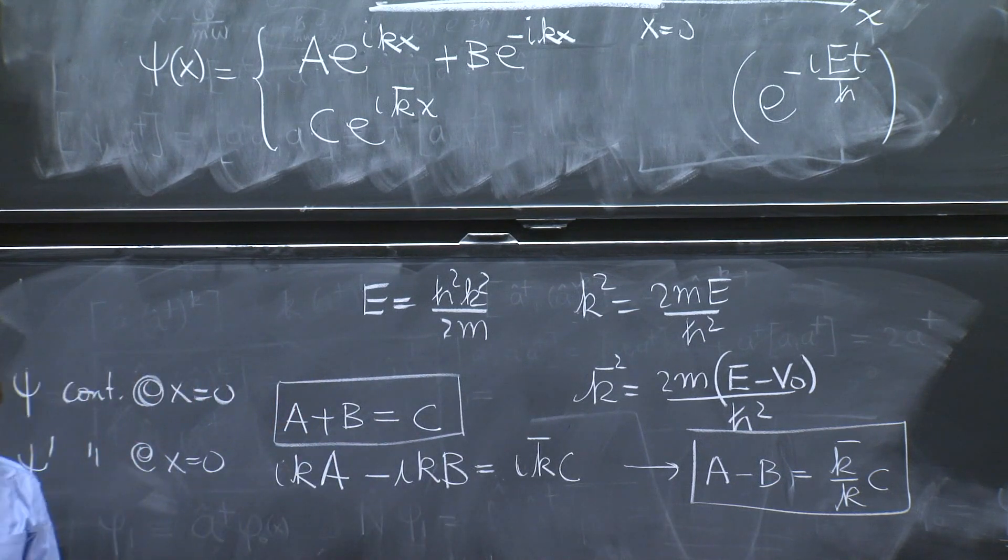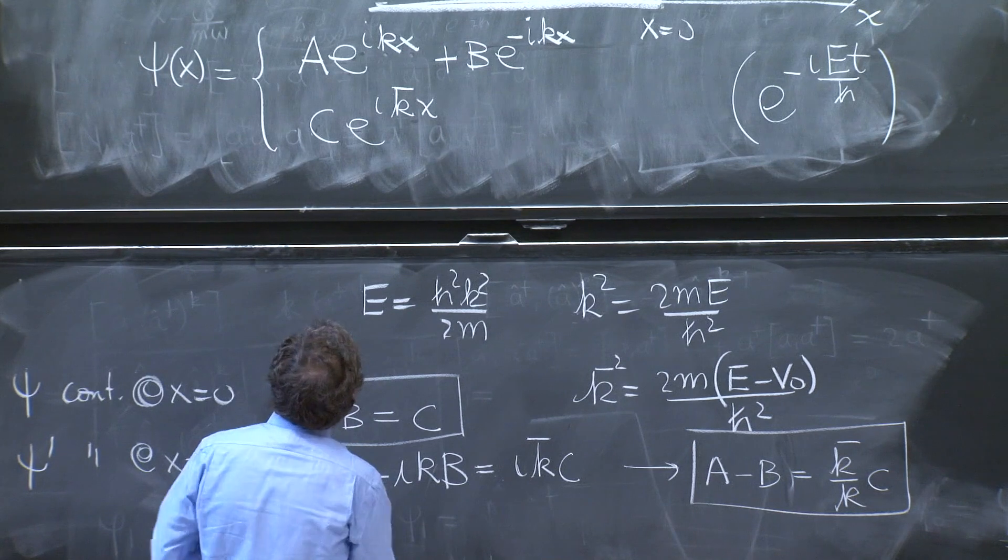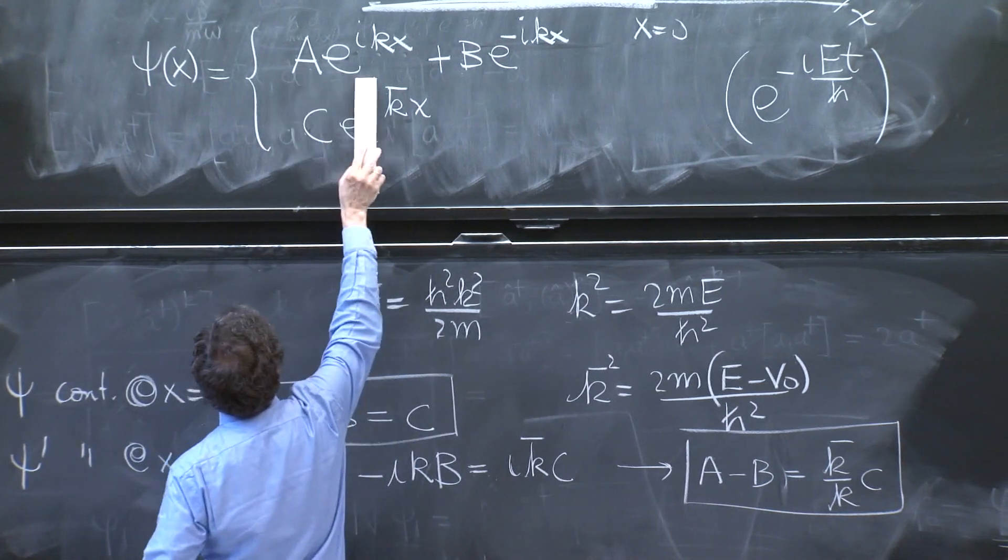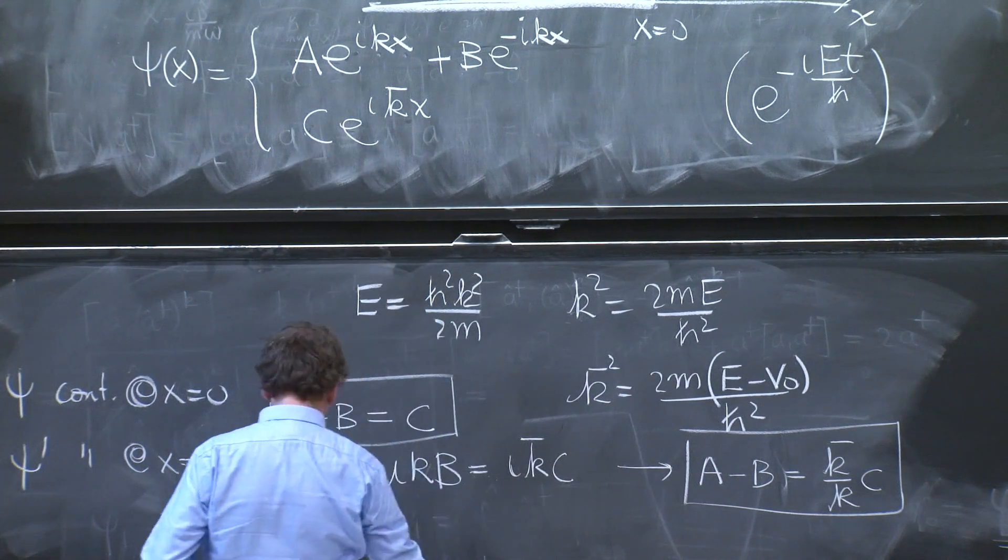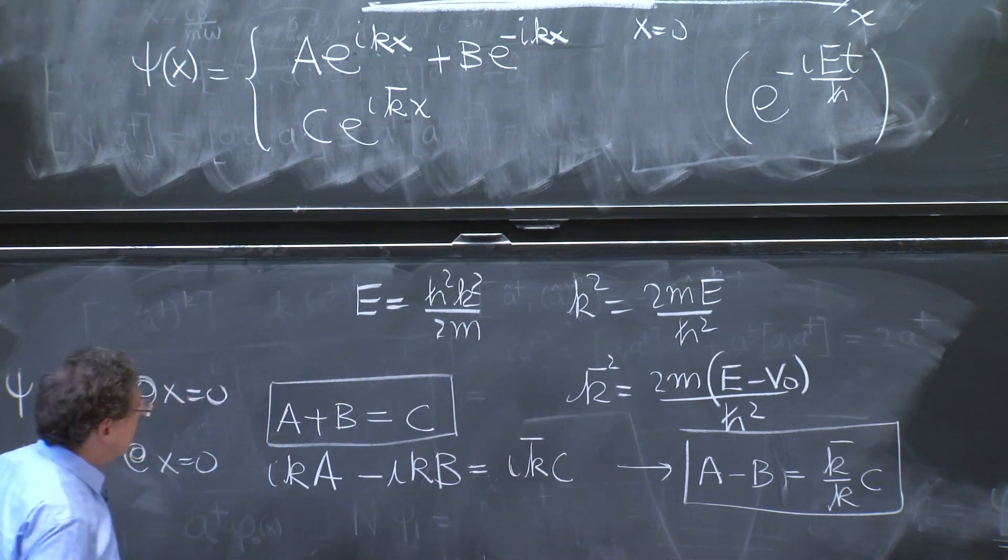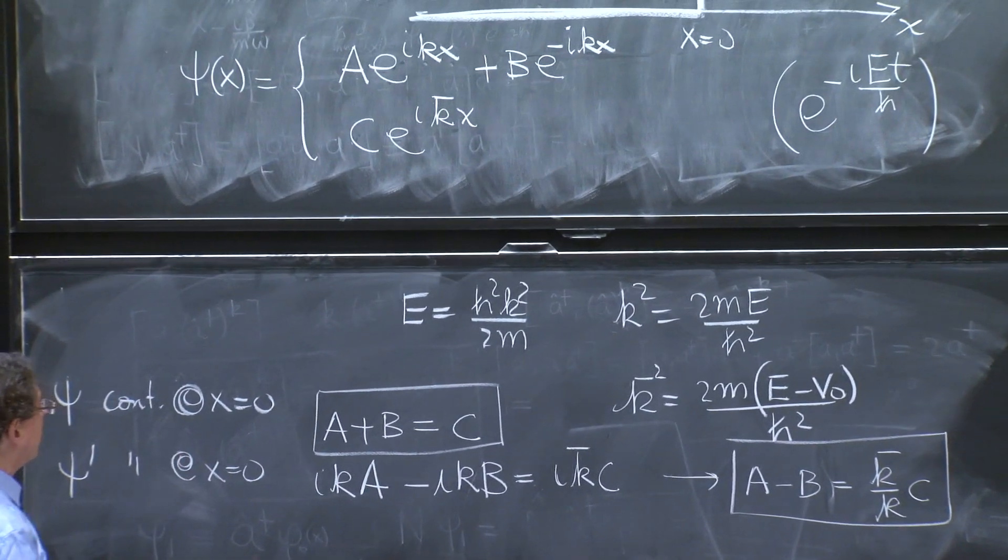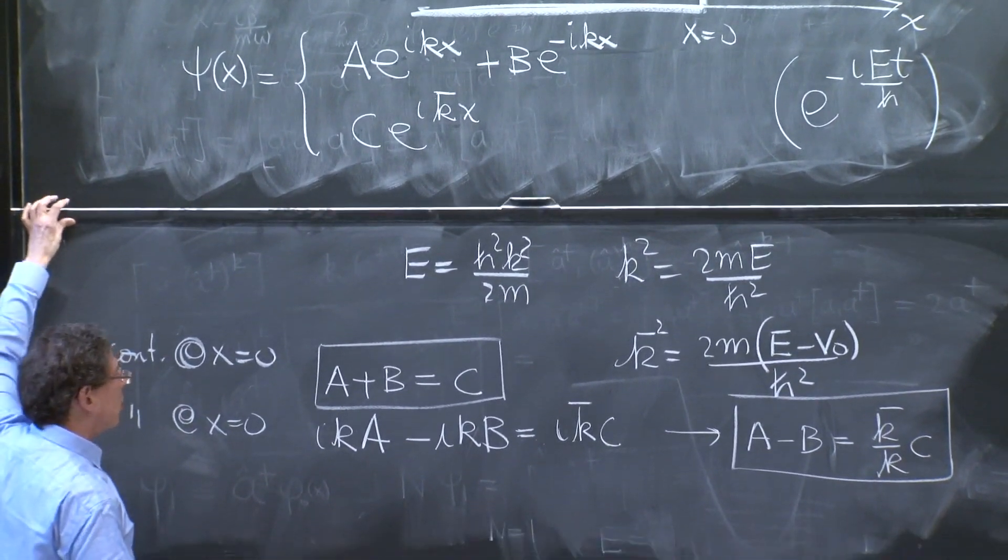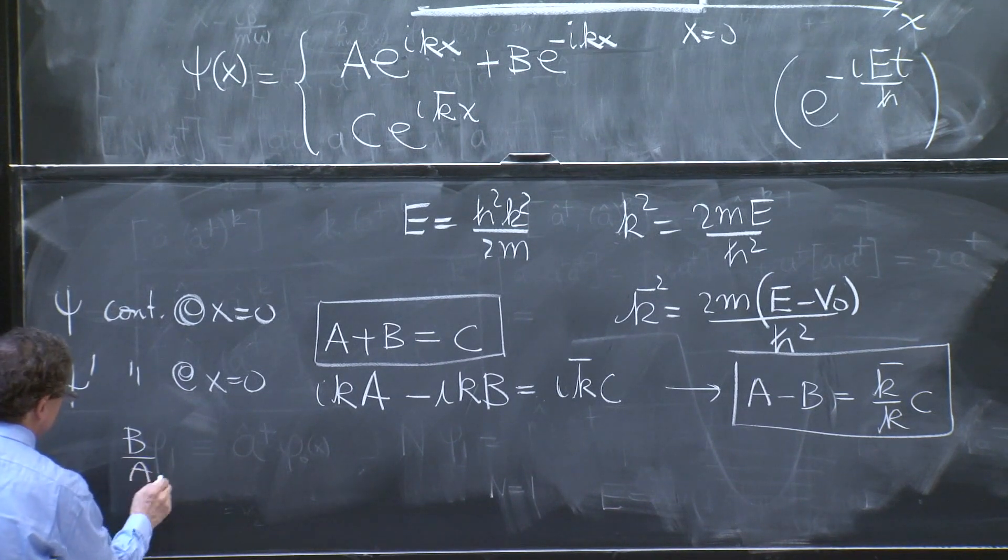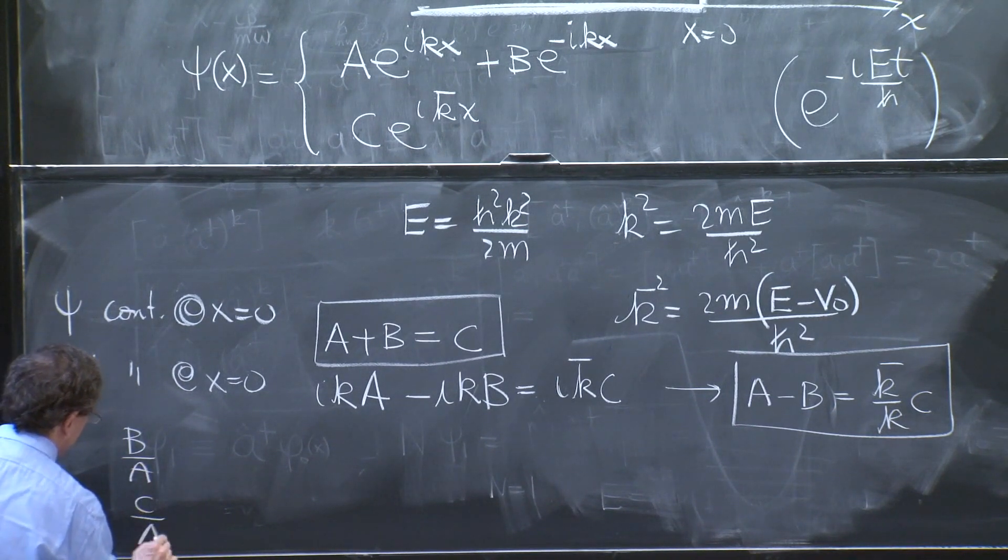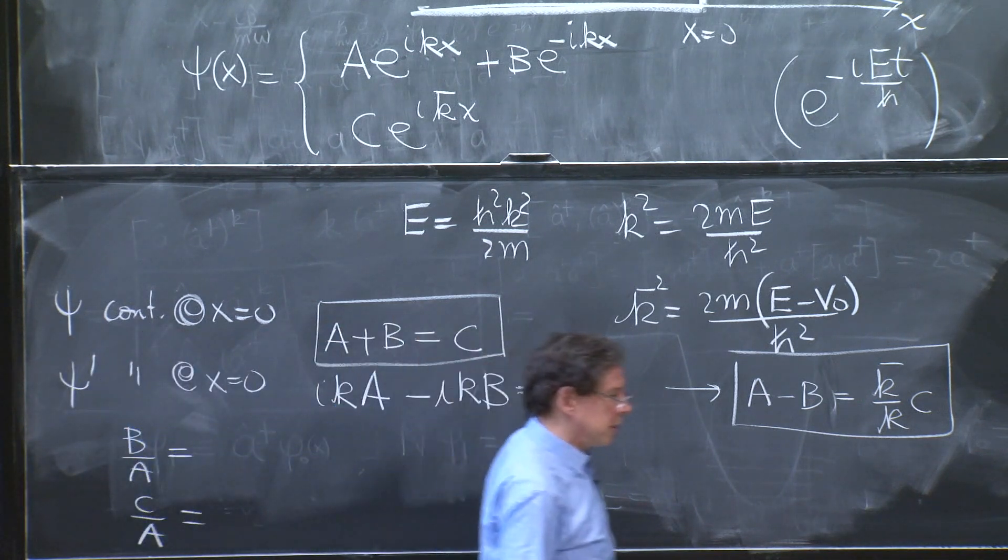And that's OK, even though there are three coefficients. Because the way to think of this is that you're sending in some wave, and you're going to get some reflection and some transmission. So in some sense, a is the input. You could want to call it 1 or whatever. So what we're looking for is what is b over a, and what is c over a?